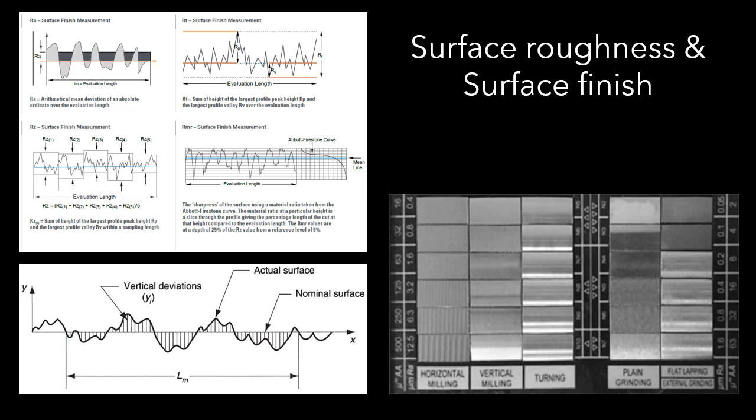Surface roughness can be defined as a measurable characteristic based on roughness deviations. Surface finishing is a more subjective term, denoting the smoothness and general quality of the surface.